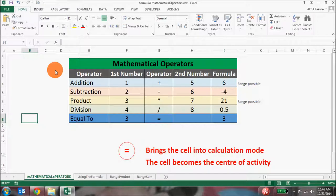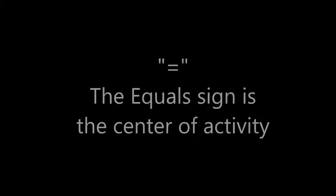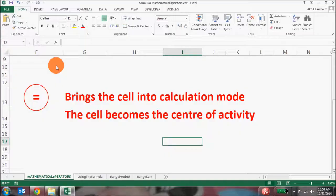Hey friends, nice to see you coming back to the class today. We're going to talk about mathematical operators and how to start using formulas. When you open your Excel spreadsheet, all the cells are in normal mode. But as soon as you put an equal to sign in any cell, that cell becomes the center of activity. An equal to sign indicates that you're going to use a mathematical operator or formula.